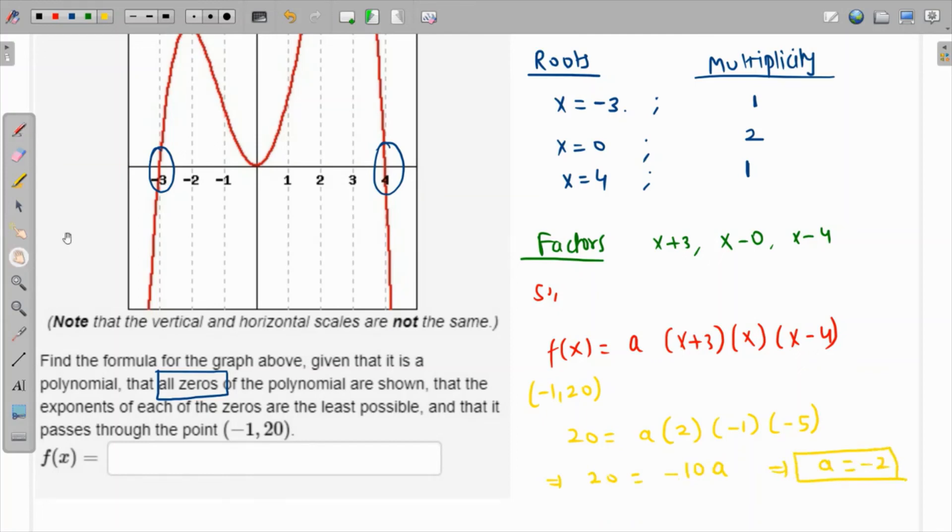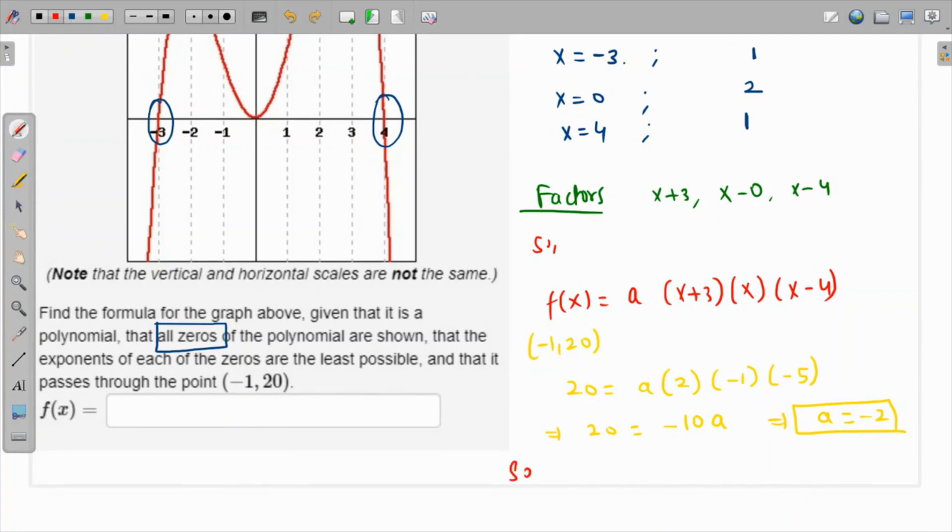Since we got a as well, the final answer is going to be: f(x) = -2(x + 3)(x)(x - 4).